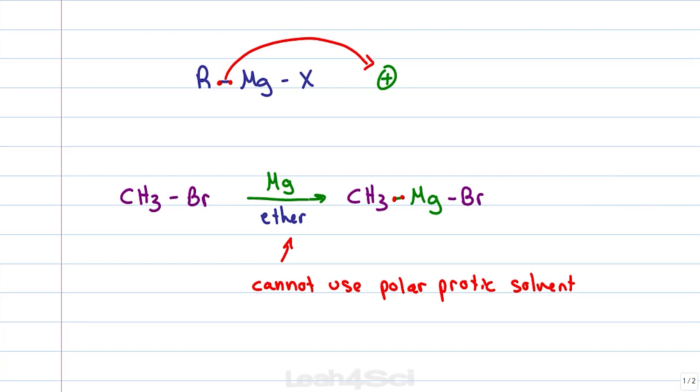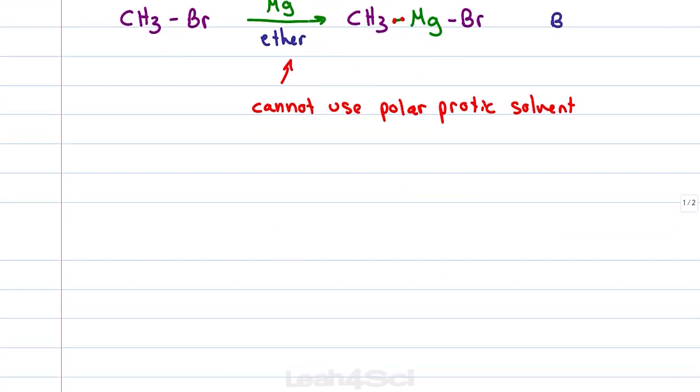I showed this with a bromine which is most common but you're also going to see it with iodine and chlorine where bromine and iodine react quickly and chlorine a little bit slower. So why do we use an ether solvent?